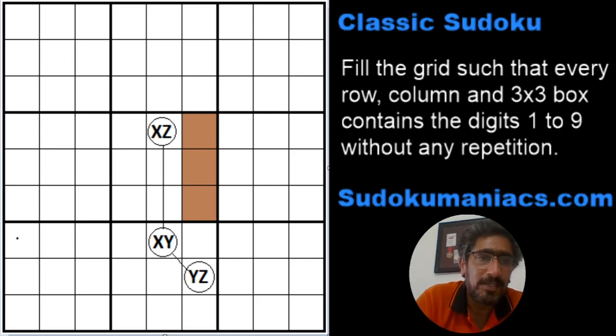So how does this information help us? What happens is, let's assume if R7C5 was an X, then R4C5 would become a Z. Or if R7C5 was a Y, then R8C6 would become a Z. So what we understand from this is, irrespective of which digit comes in X or Y in R7C5, that is whether it is X or Y,